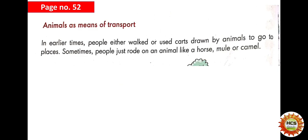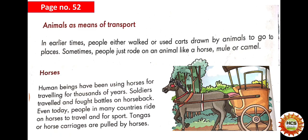Now we will discuss animals as means of transport. In earlier times, people walked or used carts drawn by animals to go to places. Sometimes people just rode on an animal like a horse, mule, or camel. In earlier ages, people used carts and also rode on horses, camels, and mules.